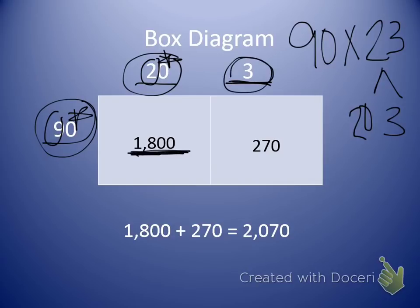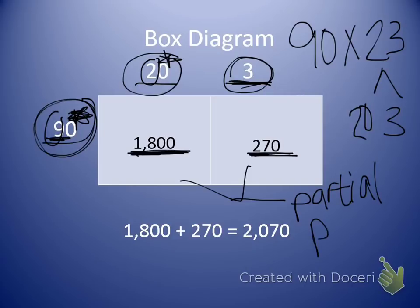Move to the next box. I've got my 3 and my 90. Again, I do my 9 times my 3. 9 times 3 gives me 27, which is how I have this. I have one zero left over right here in my factors. So I make sure I add that on, giving me 270. Both of these numbers right here are partial products. With partial products, it's always important to remember to add to find out my final answer. So I'm going to add 1,800 and 270 to give me 2,070.